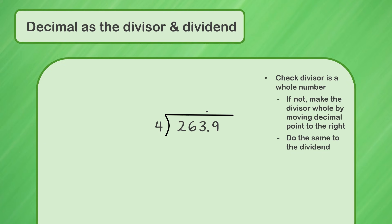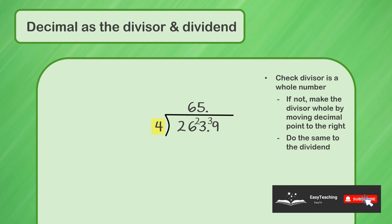And now we can work through it as normal. 4 doesn't go into 2. So we join the 2 and the 6. How many times does 4 go into 26? 6 times. And there are 2 left over. How many times does 4 go into 23? 5 times. With 3 remaining. How many times does 4 go into 39? 9 times. With 3 left over.